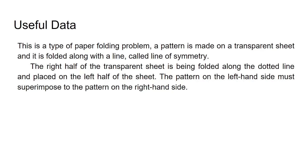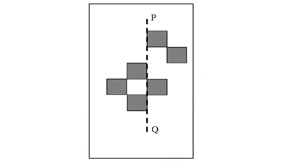In this diagram we can see that there are a total of six squares, three on each side, but none of them is at a corresponding position with the line of symmetry PQ.